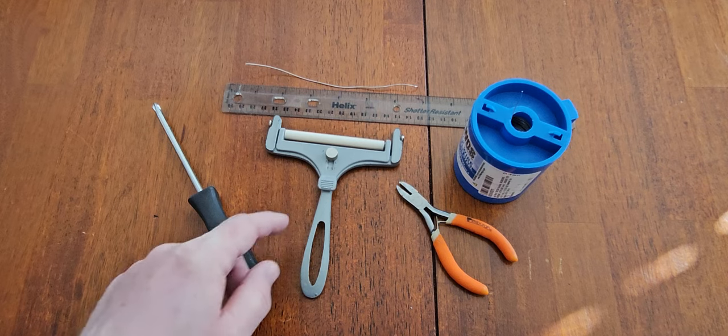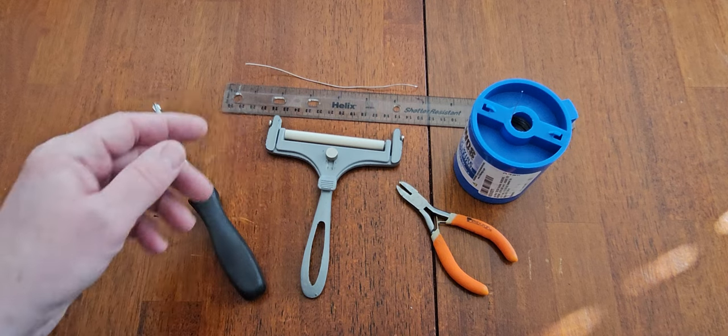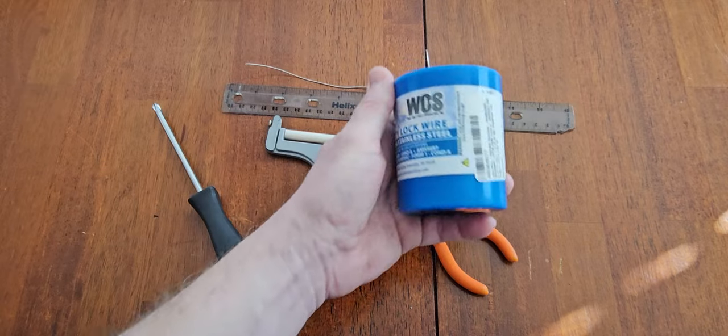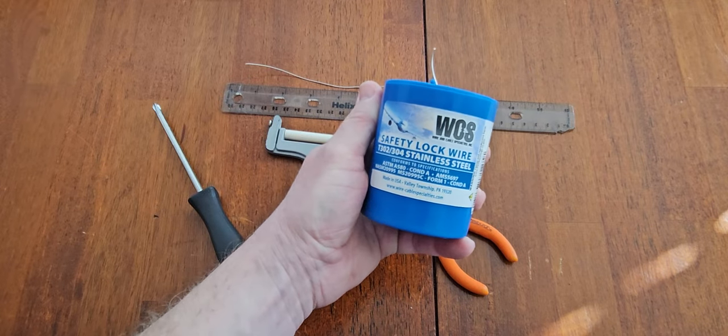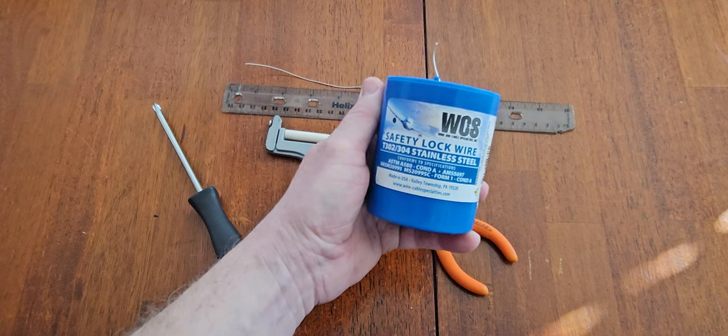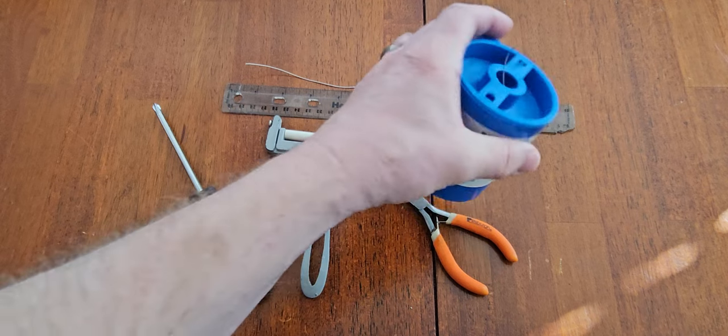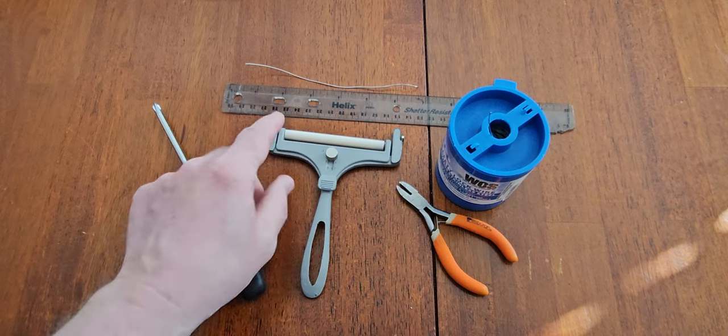I already had some of this safety lock wire, stainless steel, that I made some fishing jigs with. So I got a piece out here and it looks like it's a little over six inches.